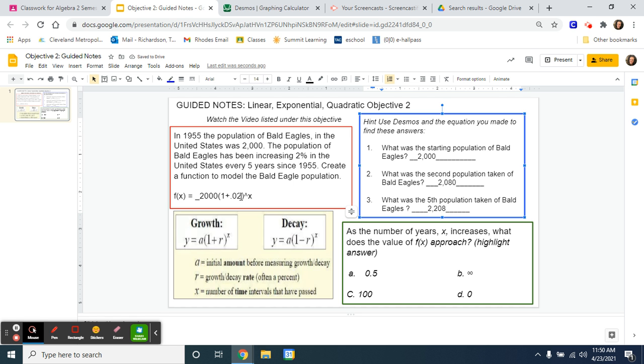So once you have this equation and make sure it's correct, you can plug in any number you want and you can get any population you want. The last thing we need to answer is this green box. I'm going to read the question to you. The wording is definitely a little more difficult, so I'll explain what it's saying. As the number of years or your x increases, what does the value of f of x approach? So what that is saying is as your years are going up, or the first population, second population, fifth population, as your years are going up, the populations you take are going up, what is happening to your actual population? So if we can see we started with 2,000, then 2,080, then 2,208. Our population is getting bigger.